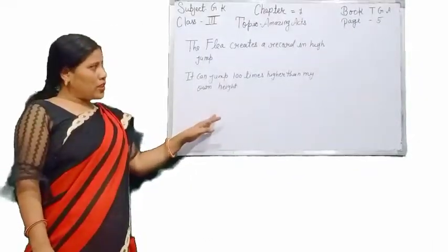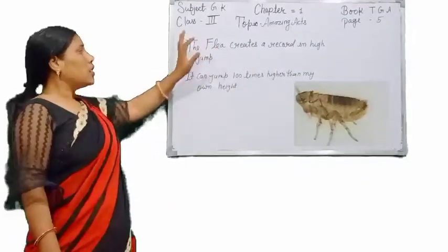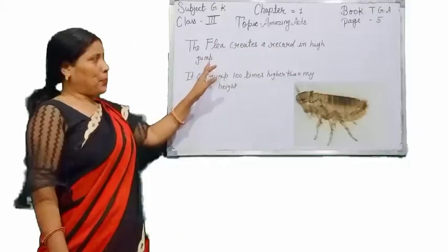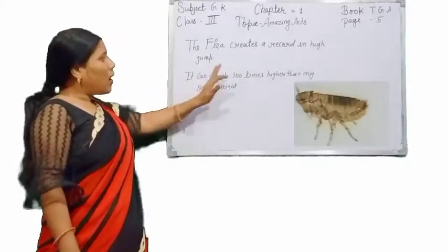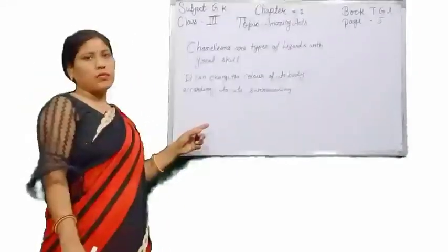So students, here you also see the picture of a flea. The flea creates a record in high jump. It can jump 100 times higher than its own height.